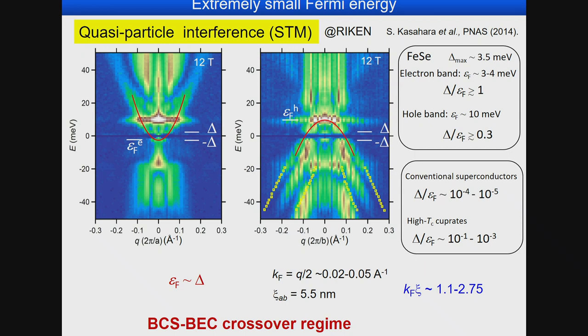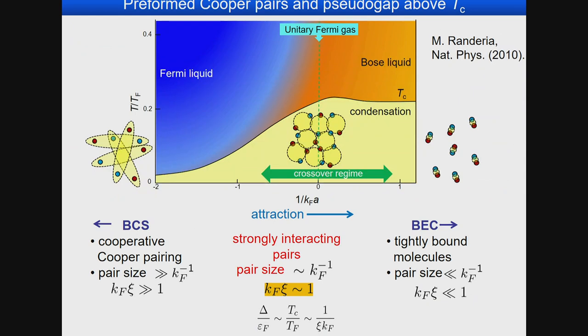From these STM measurements, we can quantify the ratio Δ/E_F, which is very close to unity for the electron band, and about 0.3 for the hole band. Both numbers are very large compared to other superconductors, placing us in the BCS-BEC crossover regime. We also computed K_F·ξ — K_F from the Fermi surface size and the in-plane coherence length from H_C2 measurements — and these numbers are again consistent with the BCS-BEC crossover regime. Iron selenide is located deep inside this BCS-BEC crossover regime.